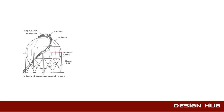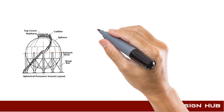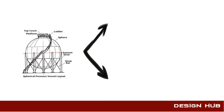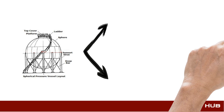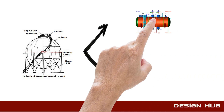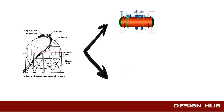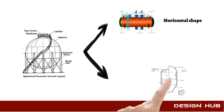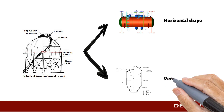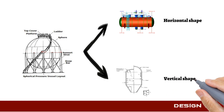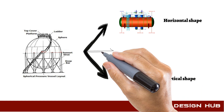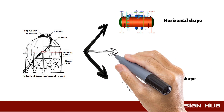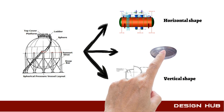First we discuss about the most optimized shape: the spherical pressure vessel. Then we link the spherical pressure vessel concept with the horizontal cylindrical pressure vessel shape, and lastly with the end cap.